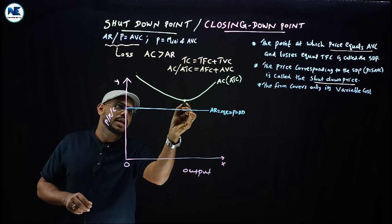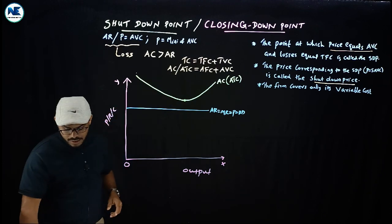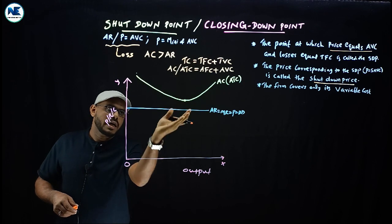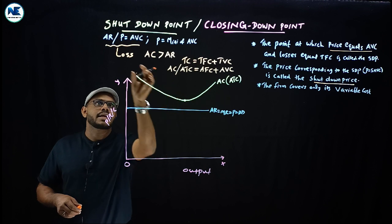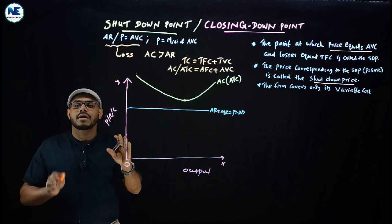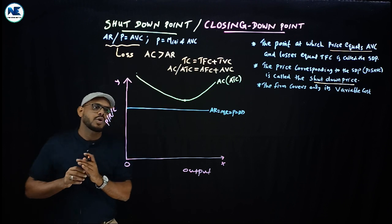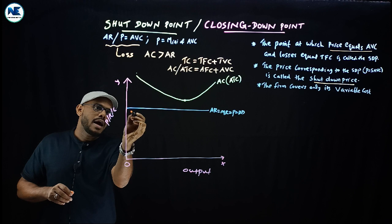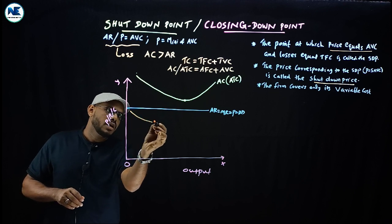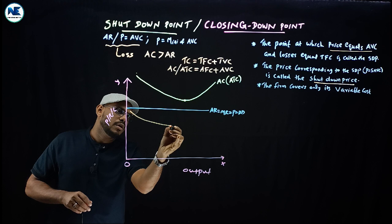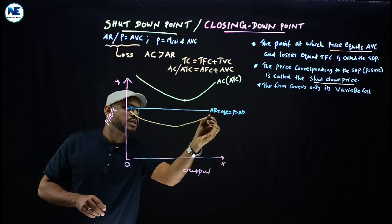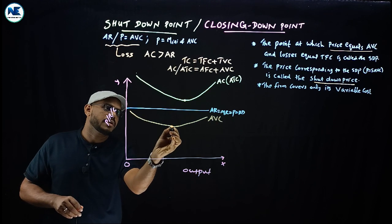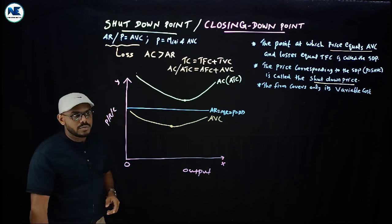The minimum point of the average total cost curve is where the marginal cost curve passes through it. When average revenue is below average cost, the firm is making a loss — earning subnormal profit. Now we draw the average variable cost curve, also U-shaped. The marginal cost curve also passes through the minimum point of the average variable cost curve.